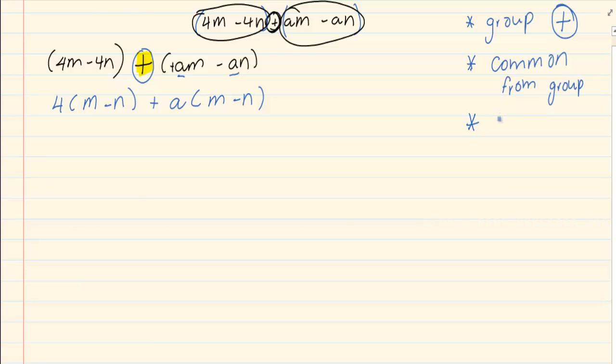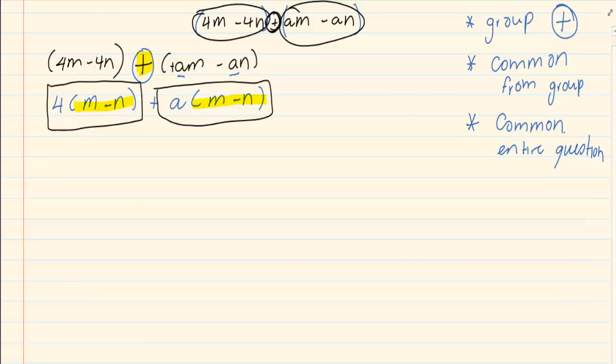Then you look at the bigger question and you take out a common again, but now you're taking out a common from the entire question. If you look, there are two terms. This is your first term and this is your second term. What is the same in each term? The entire bracket m minus n is the same. So if I take that out, m minus n. What am I left with? I'm left with a 4 plus a.